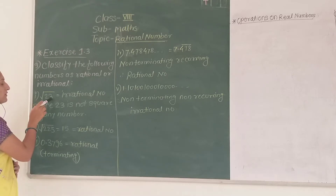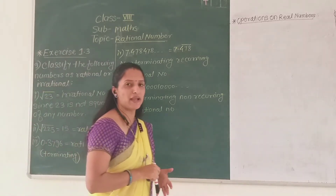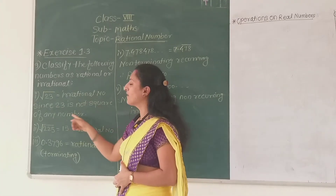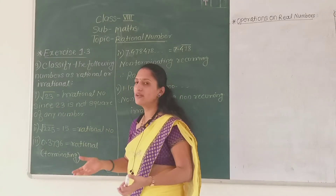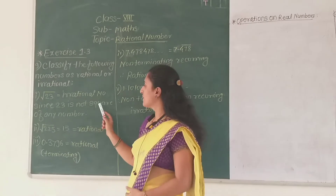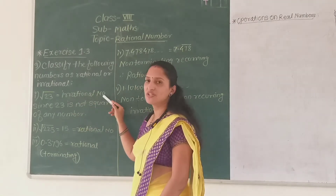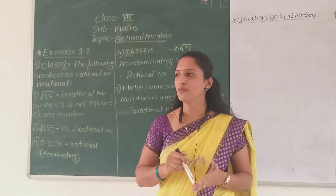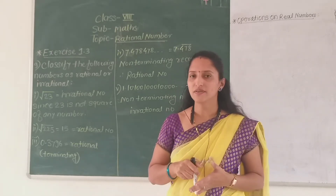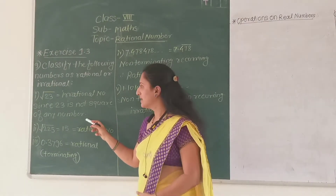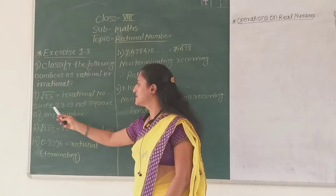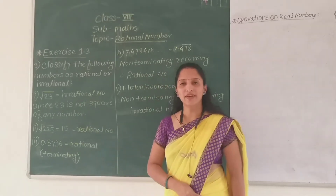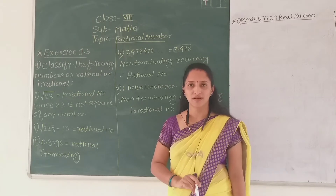Now look here. 23 is a prime number, and 23 is not a perfect square of any number. So if it is not a perfect square of any number, then its square root is an irrational number. Just like root 2, root 3, root 5 — these are all prime numbers and not perfect squares. Similarly, since 23 is not a perfect square of any number, square root of 23 is an irrational number.